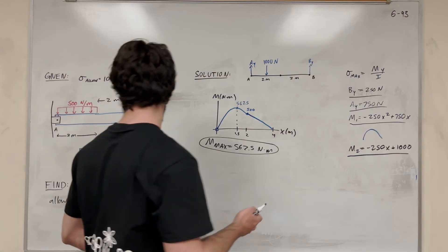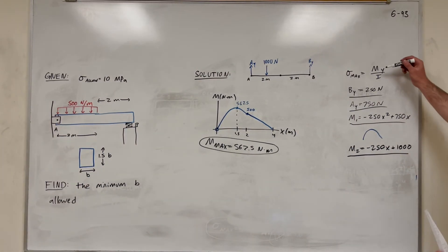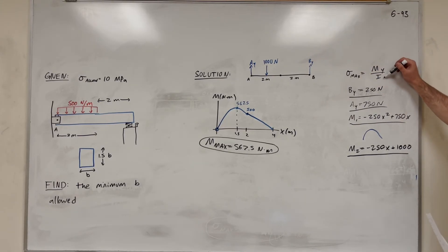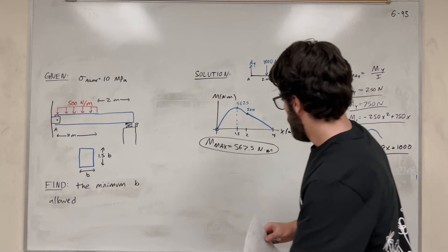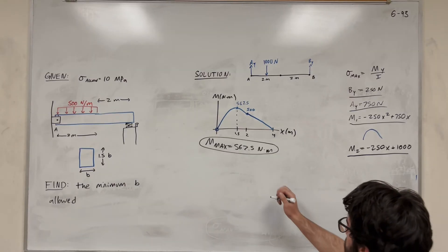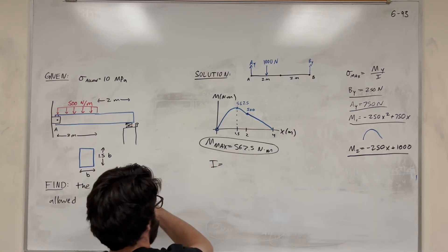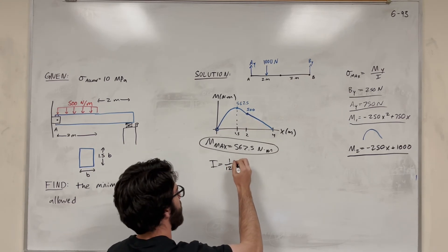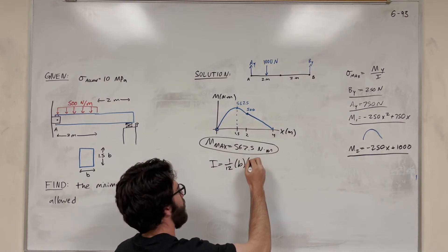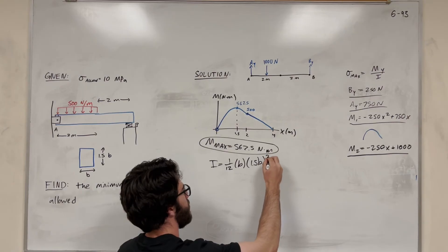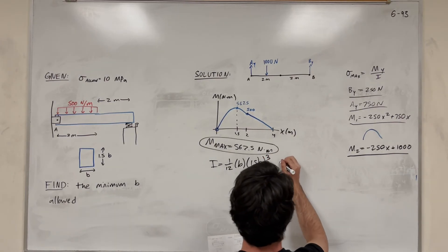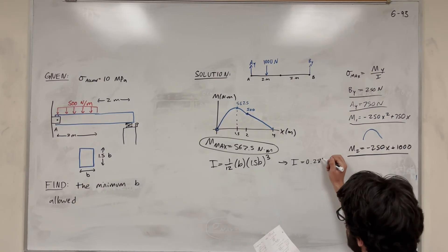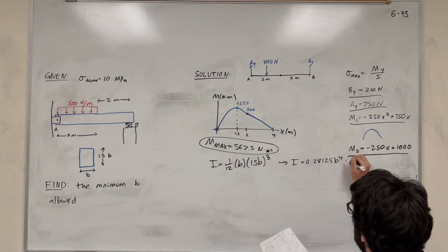Now let's solve for the minimum base B. We know the maximum bending stress, we know the maximum moment, we can find Y, and we need the moment of inertia. For a rectangle, the moment of inertia is (1/12) × base × height³. The base is B and the height is 1.5B, so I = (1/12) × B × (1.5B)³, which gives I = 0.28125B⁴ meters to the fourth.